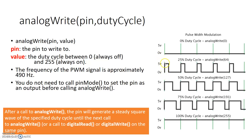Now imagine the digital pin was 5 volts for a small amount of time — one fourth of the time — and 0 volts for the other three fourths of the time. So it's 5 volts for 25% of the time, and 0 volts for 75% of the time. We call that a 25% duty cycle. Here is an example of a digital pin staying at 5 volts for 50% of the time and 0 volts for the remaining half — we call this a 50% duty cycle.